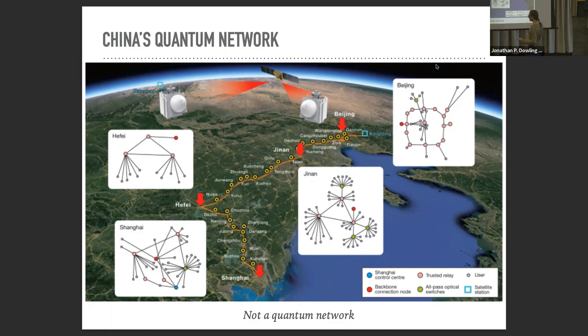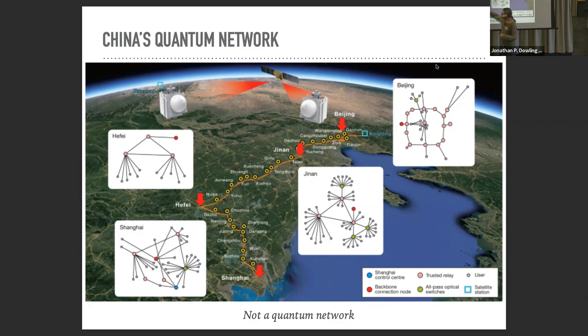This particular type of network really only has one use: trusted node quantum key distribution. It's called trusted nodes because if I want to share a quantum key between two distant nodes, I have to trust that all the nodes in the middle are secure. From one edge to the next, quantum key distribution is performed, the key gets measured and retransmitted. If any node gets compromised, the entire length gets compromised. It's a pseudo quantum network where you only get quantum information between nearest neighbor nodes.